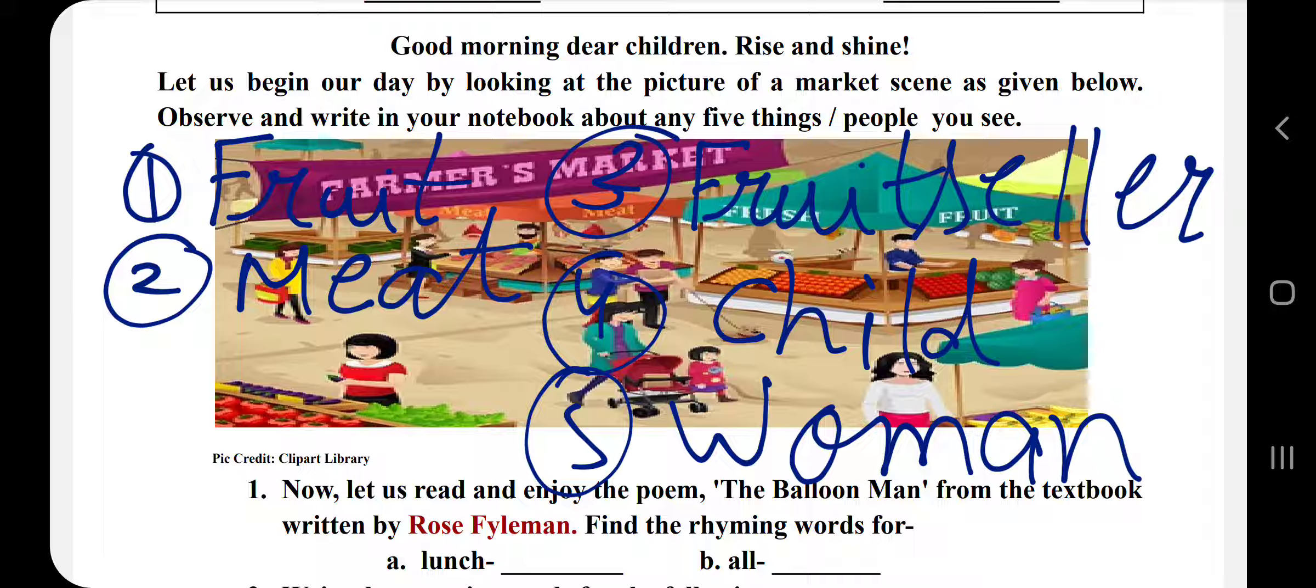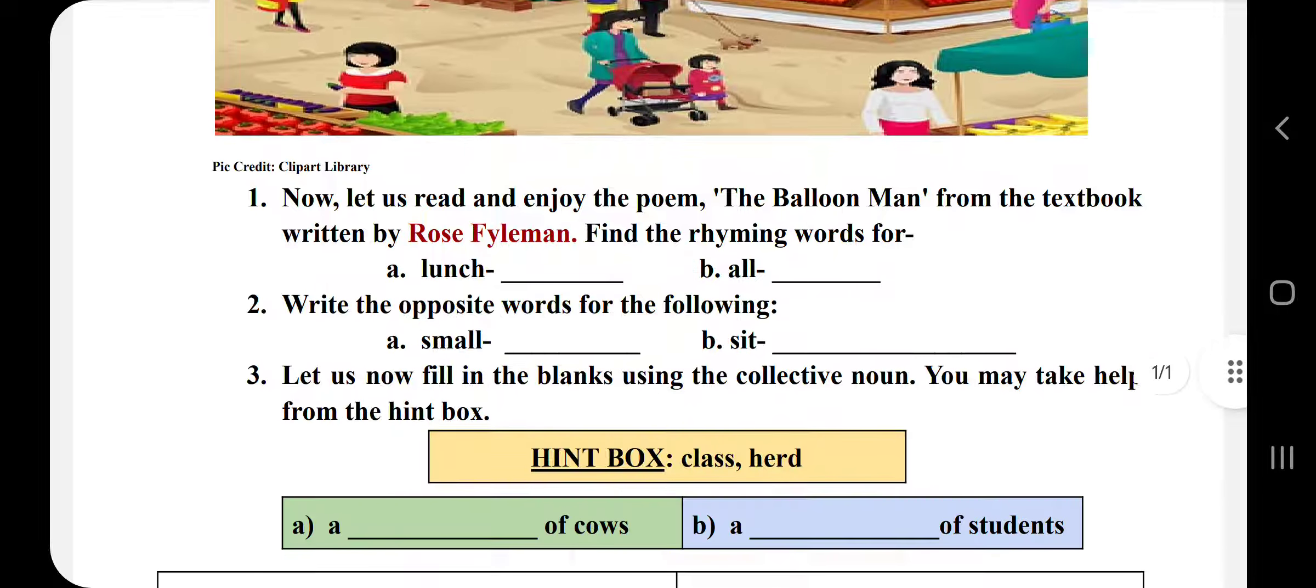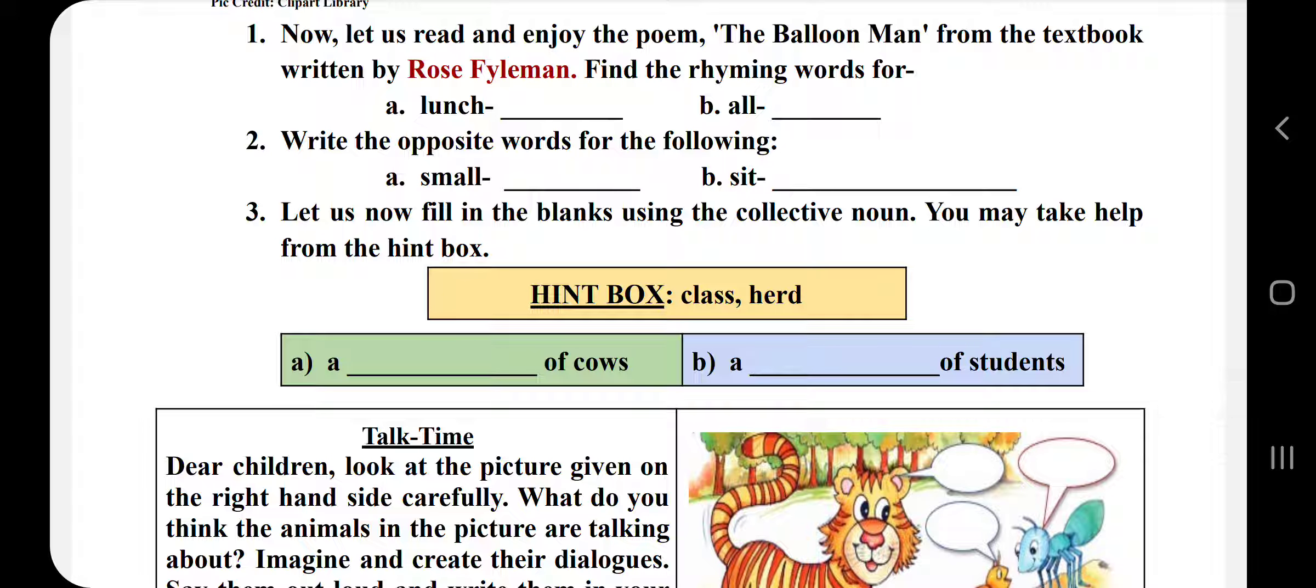Now let us read and enjoy the poem the balloon man. Let's read this poem. The poem is written by Rose Fyleman. Find out the rhyming words. You can see lunch and bunch, so lunch rhymes with bunch, bunch of balloons, and all rhymes with ball.